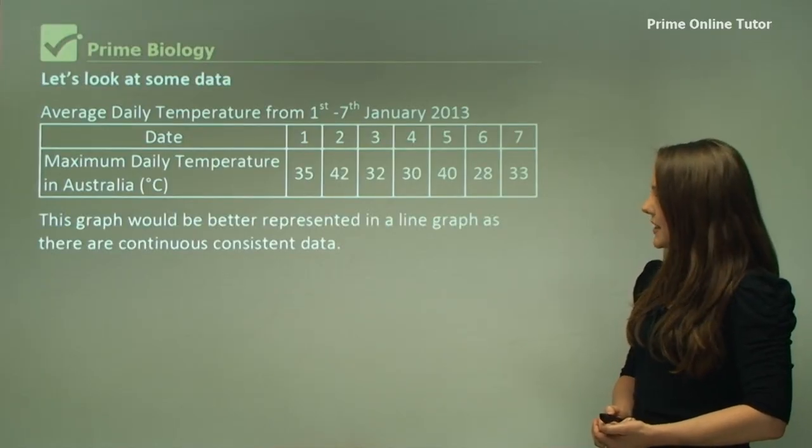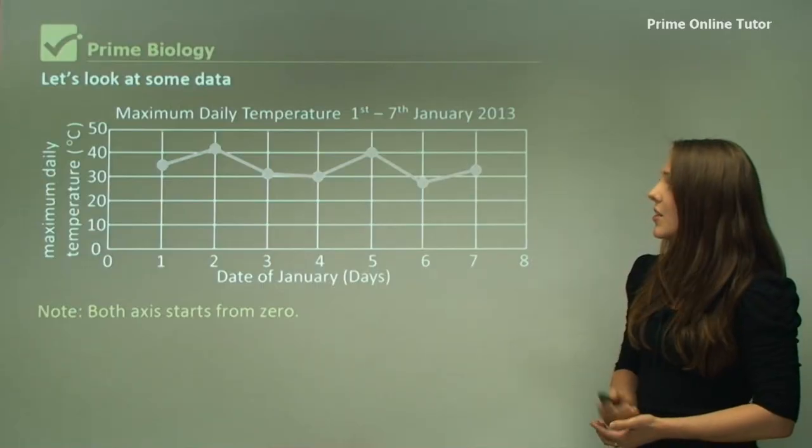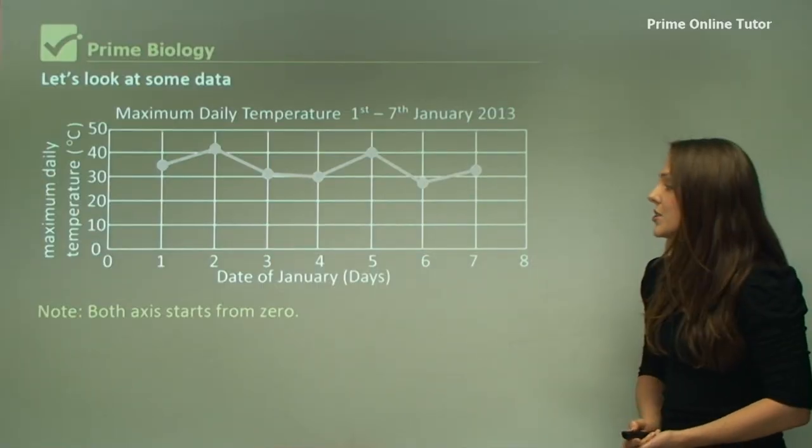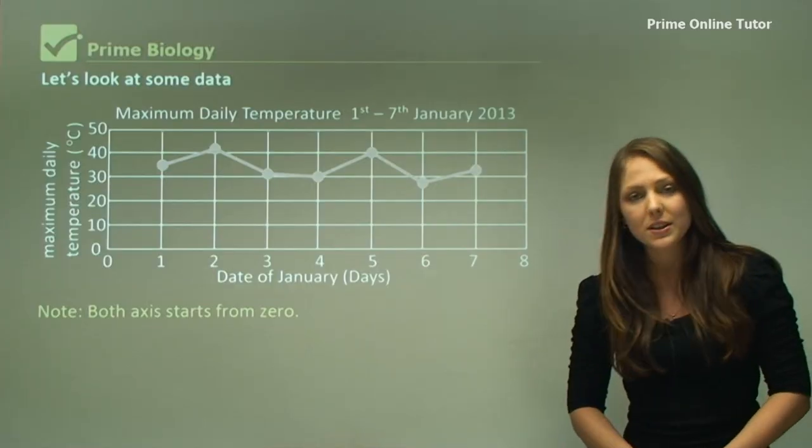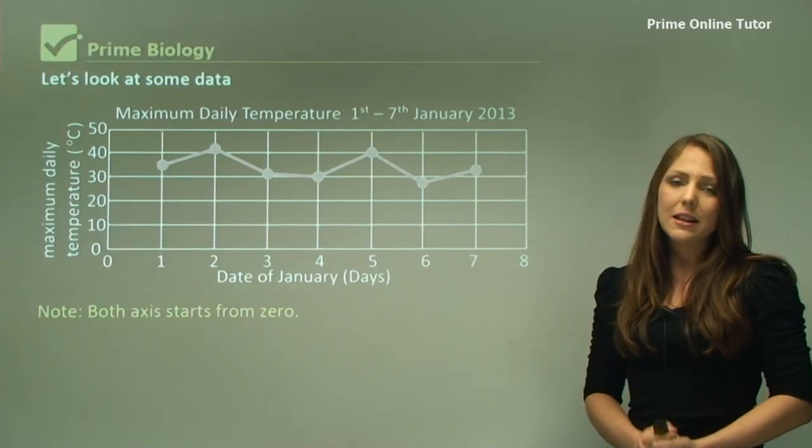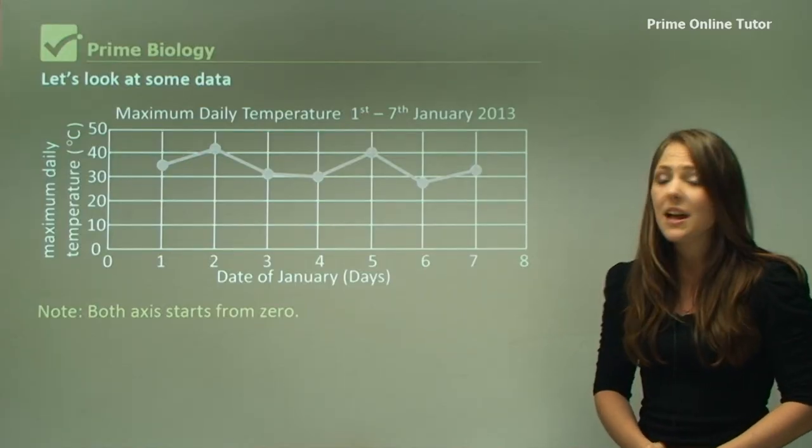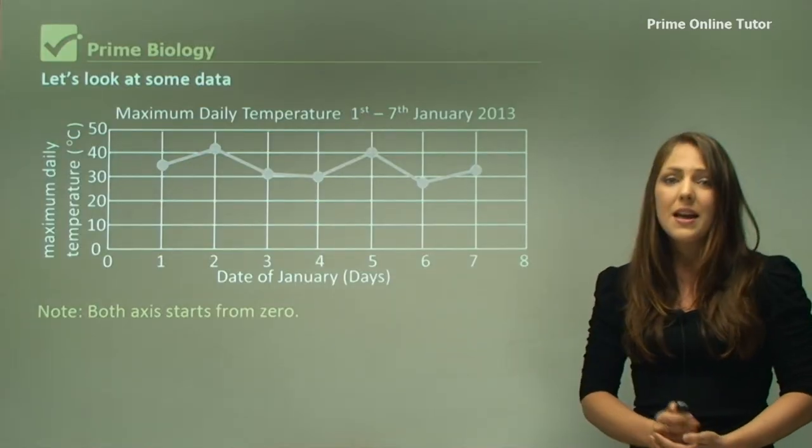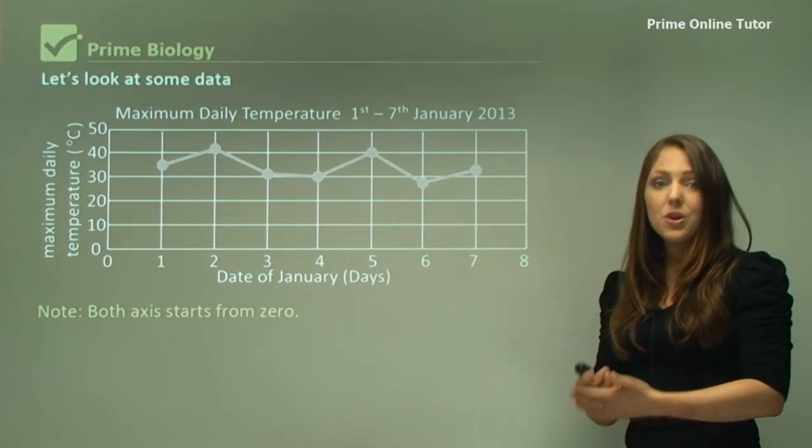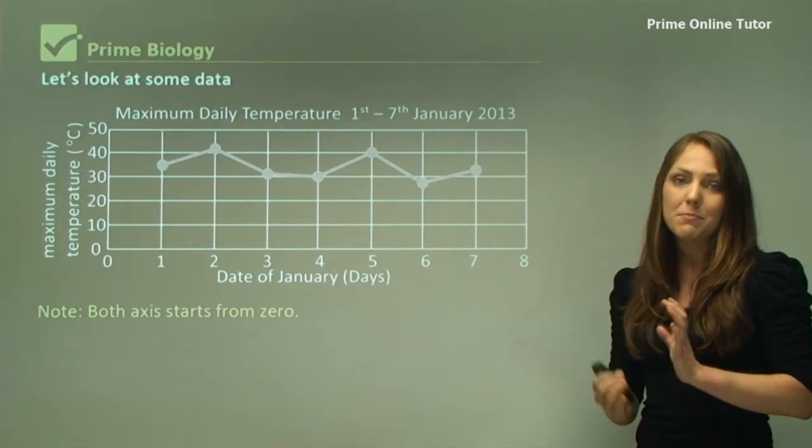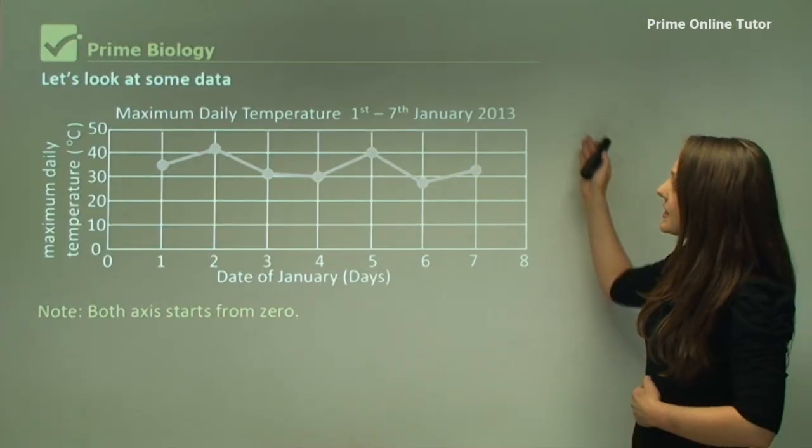This graph will be better represented as a line graph as there is continuous consistent data. This is a typical line graph you may draw. As you can tell, both axes start from zero, which is very important in science. I have noticed in one past HSC exam they didn't start from zero, however in science it's important because if you don't, you can skew the values and make them look much further apart than they are.